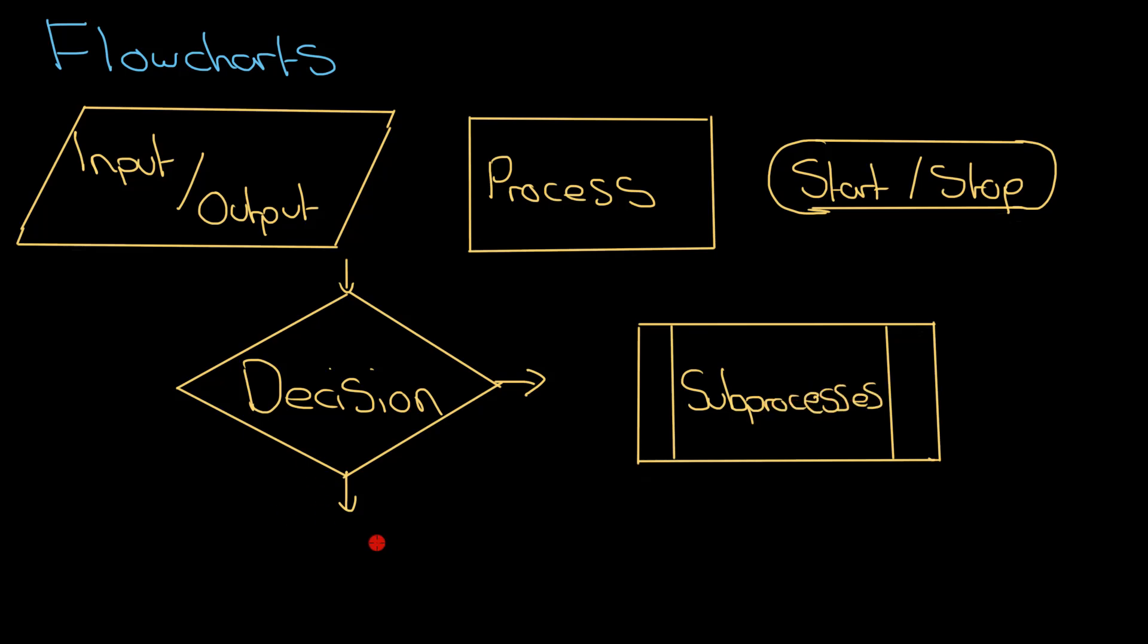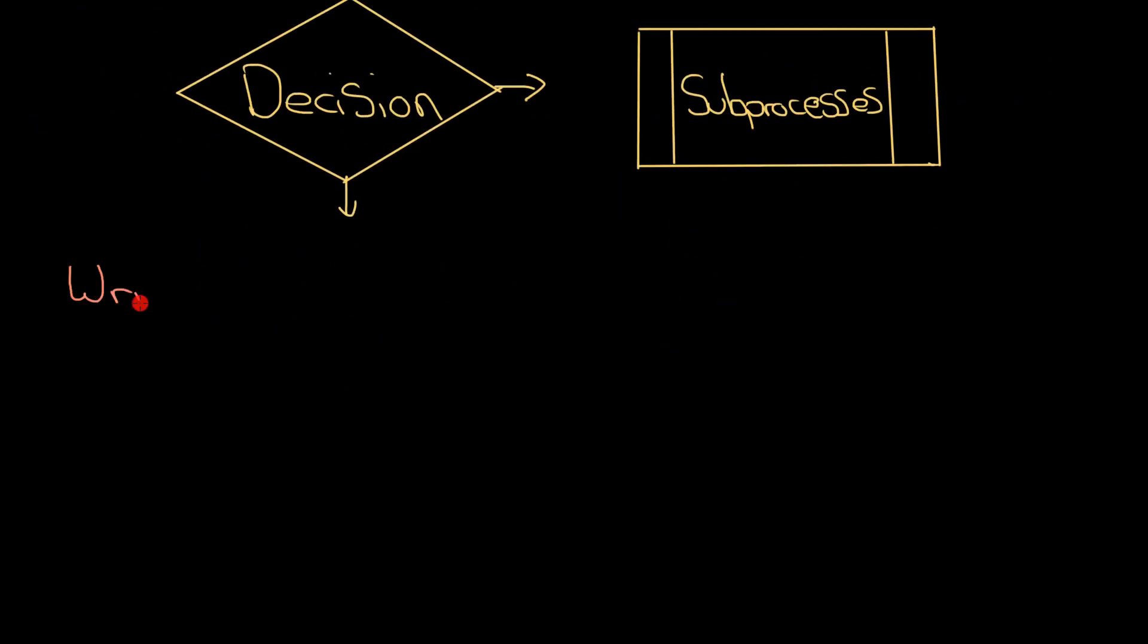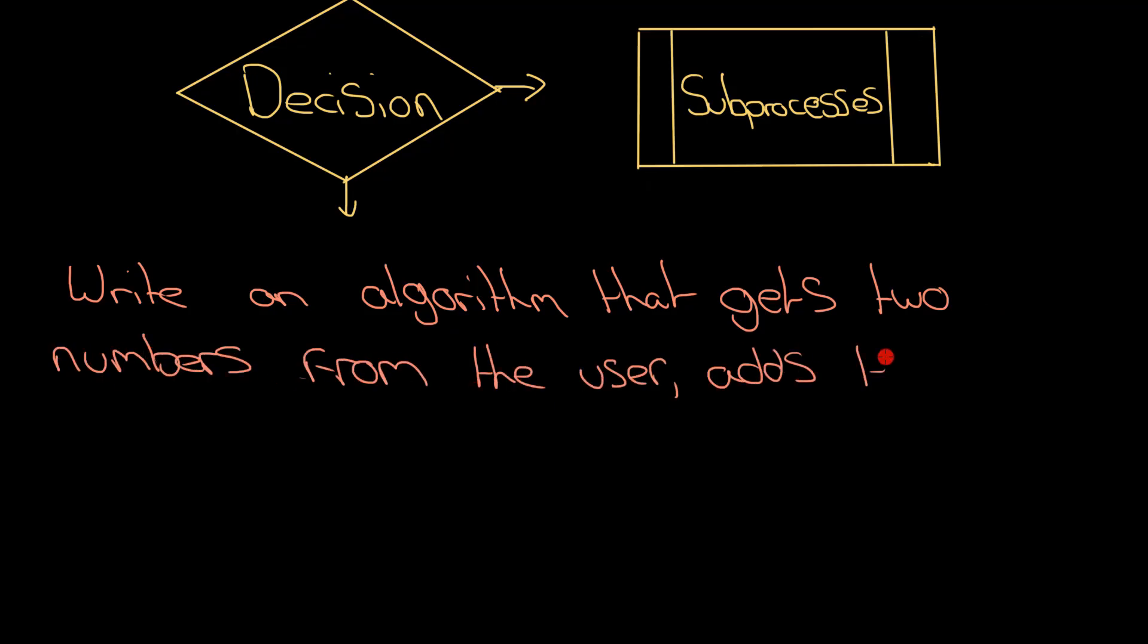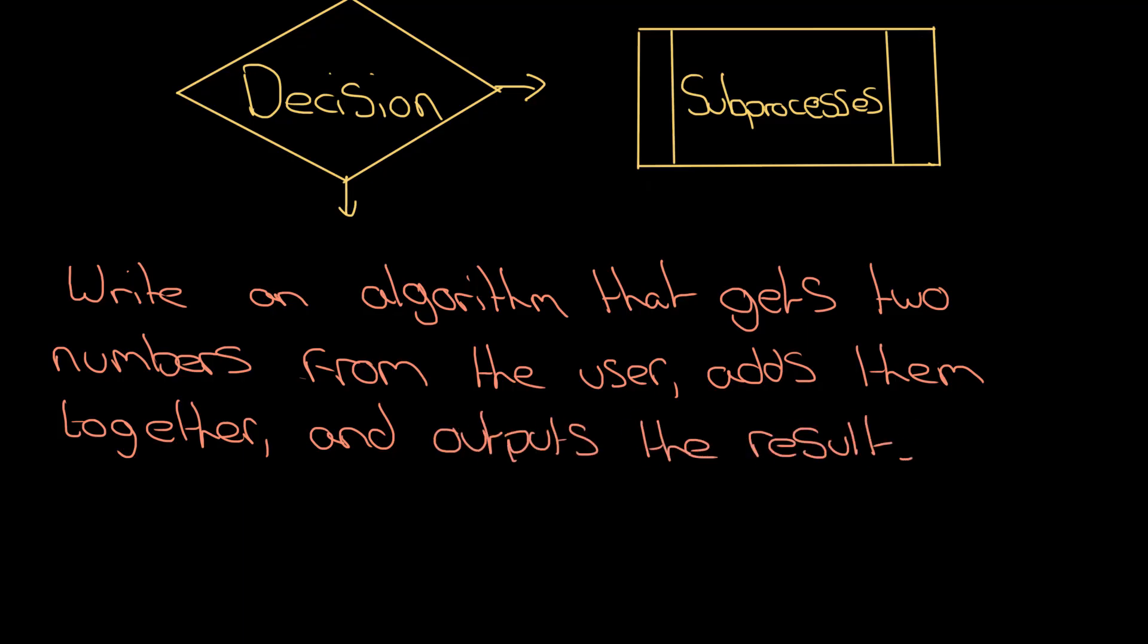Let's have an example algorithm then and we'll put together a flowchart for it. We're going to do something really simple. Write an algorithm that gets two numbers from the user, adds them together, and outputs the result.